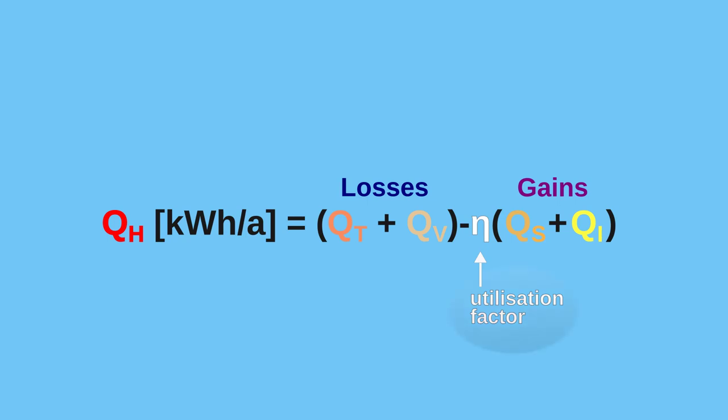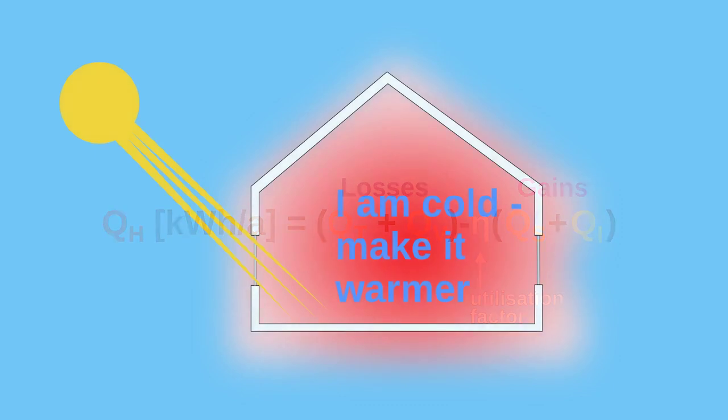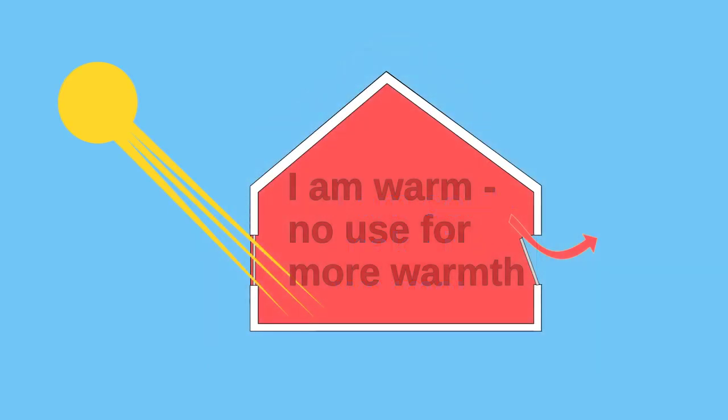This is expressed with the utilization factor ETA, which will be large for poorly performing houses, sponges that soak up every bit of heat, whereas in a high performance building, heat saturation is more easily achieved, but the utilization of free heat will be less as a result.